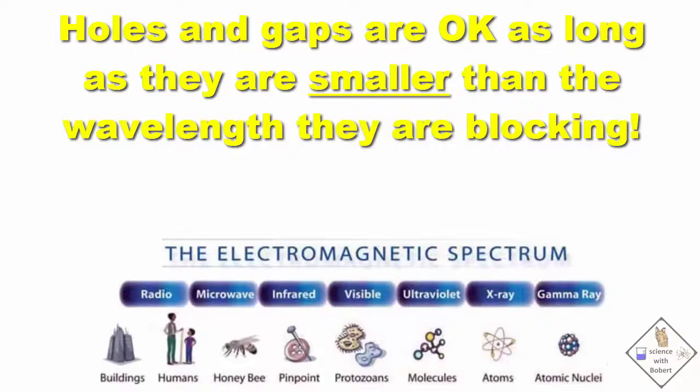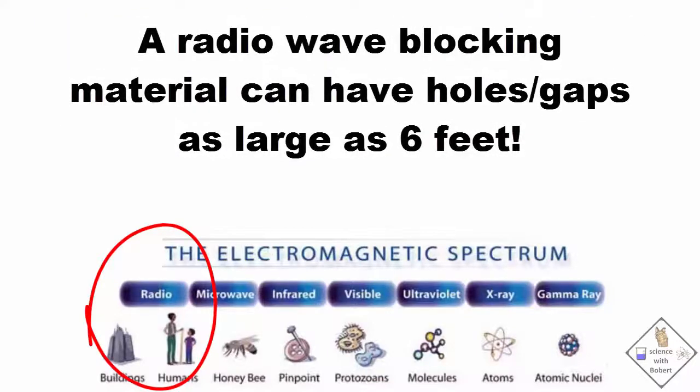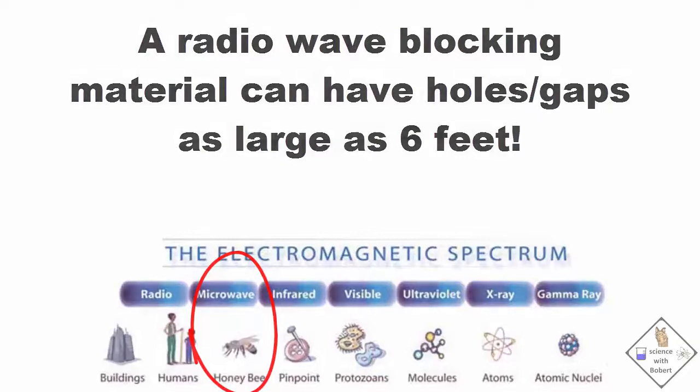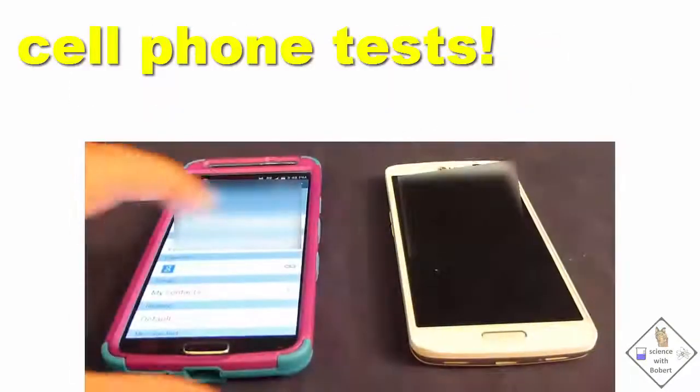It still works. That's because radio waves are huge. Remember, radio waves have a wavelength that is the size of buildings down to around six feet. The holes in our foil are not that big, so the radio waves cannot fit. However, look at microwaves. They are a lot smaller. The presence of holes may be a serious problem when building a cell phone signal blocker. So let's try it.